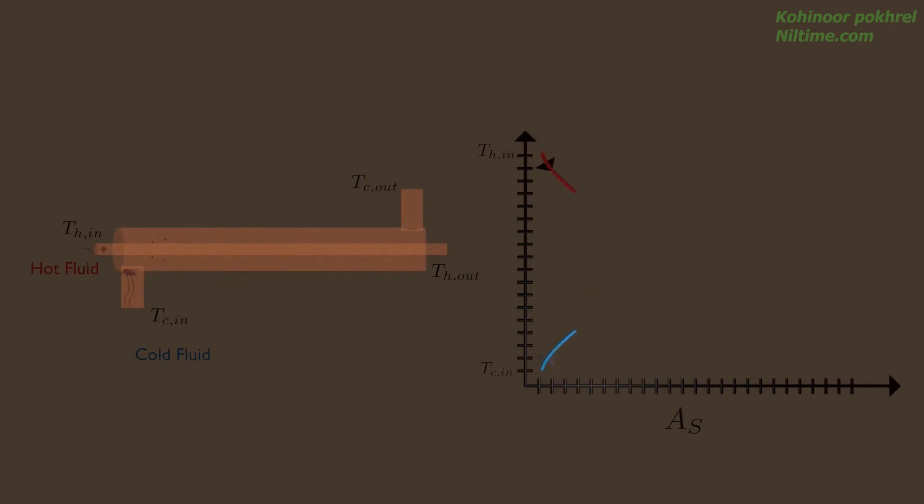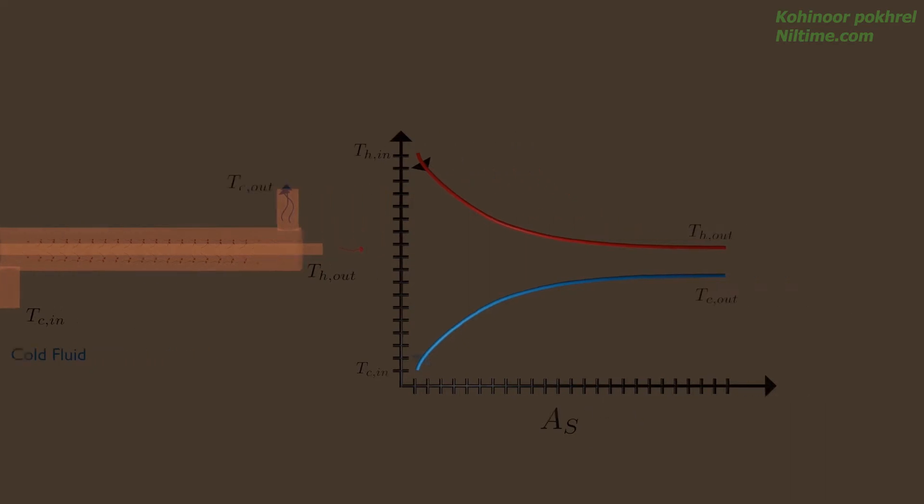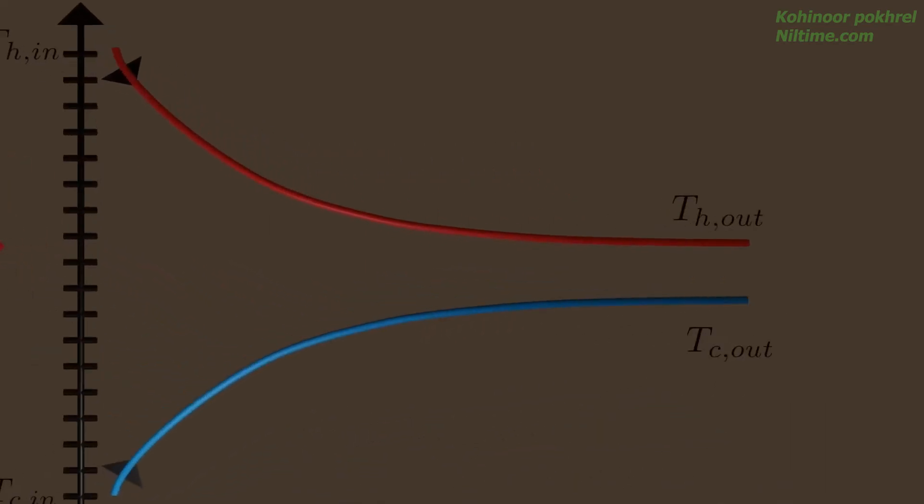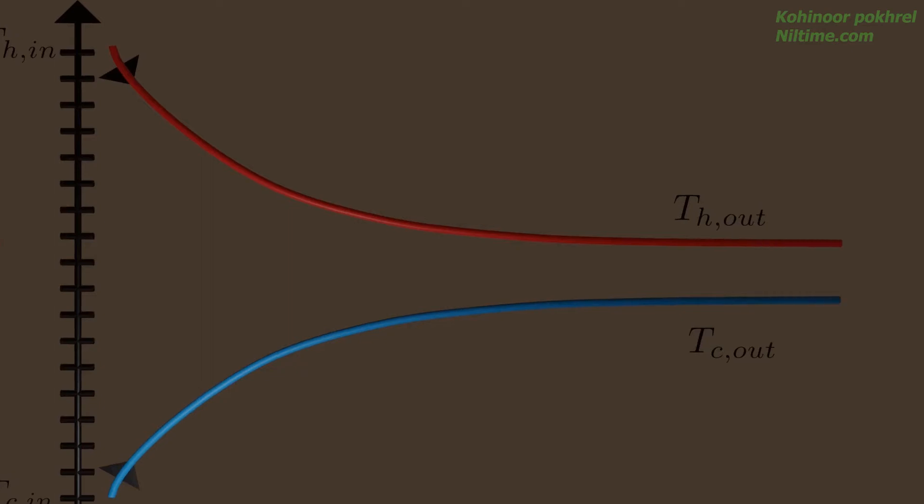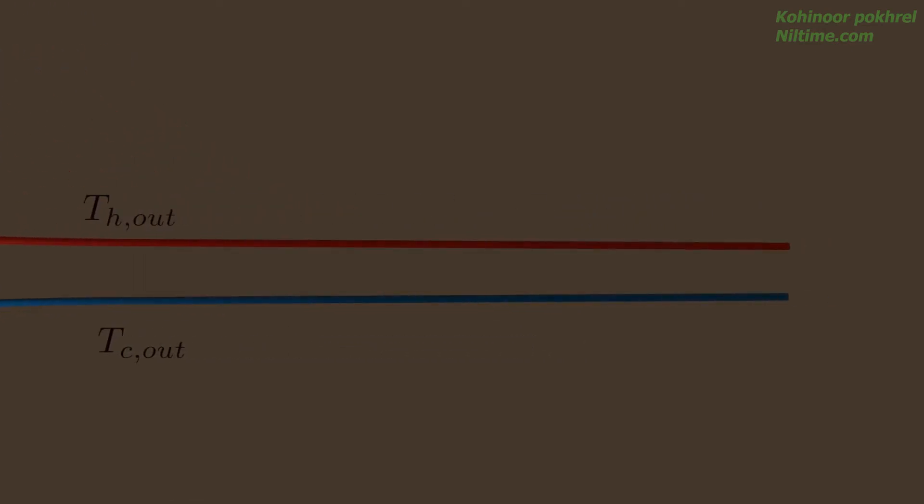Notice how the temperature of hot fluid decreases and the temperature of cold fluid increases exponentially along the heat exchanger with area. But according to the law of thermodynamics, the temperature of cold fluid can never exceed that of hot fluid, no matter how long the heat exchanger is.